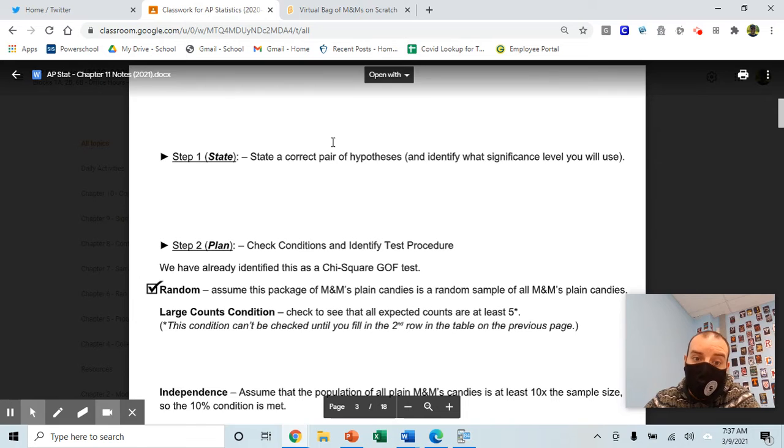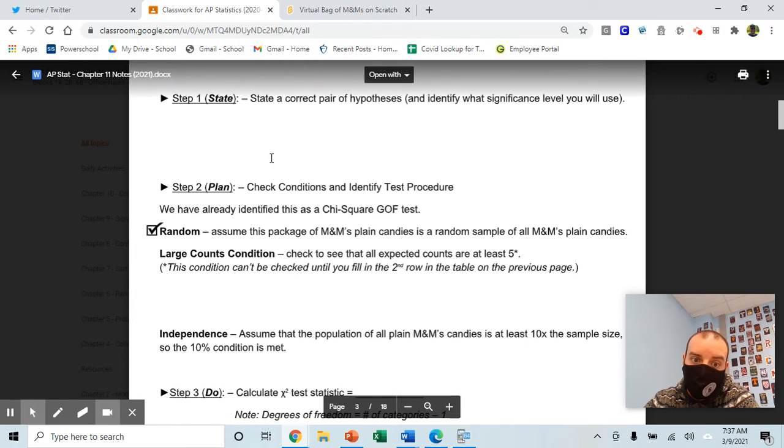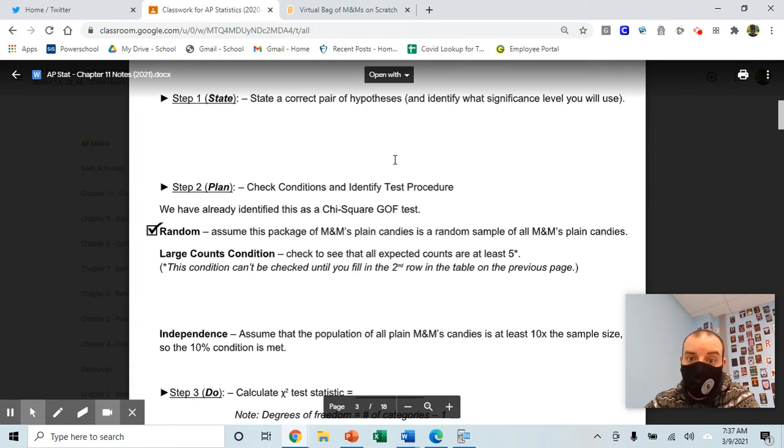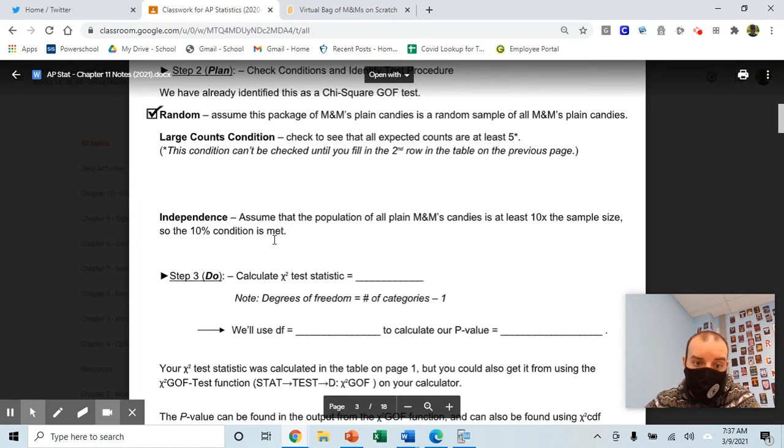Then we'll go through and write our hypotheses. You'll need to watch the Edpuzzle video on how to write hypotheses for chi-squared tests in order to do that. After you've done that, check your conditions: randomness condition, large counts condition for chi-squared tests—say that all of your expected counts have to be at least five—then your independence condition.